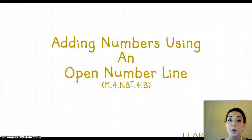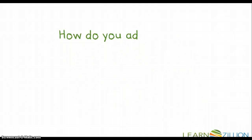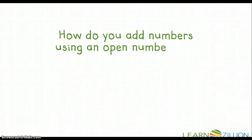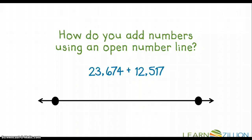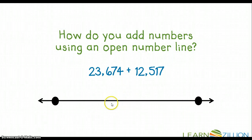Good luck and I hope you are successful on your quest this week. Our guiding question today is: how do you add numbers using an open number line? So if we have the two numbers 23,674 plus 12,517, how am I going to add those together using an open number line? When we look at an open number line, there are no real specifics — we're not sure where it starts, where it ends, and there are no lines in the middle. An open number line is open to interpretation, and you can plug in the numbers and add different values as you see fit.